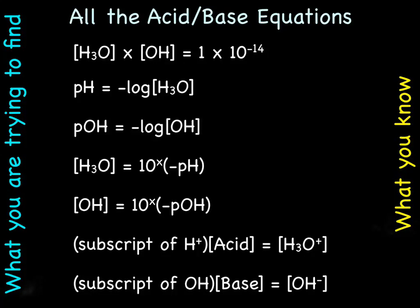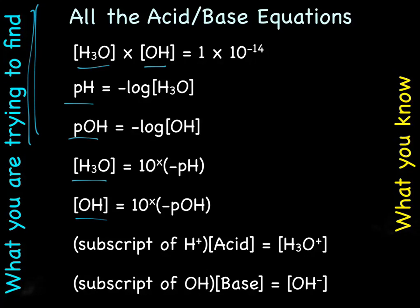Here's a list of all of the equations we have so far for calculating pH. For the most part, the things on the left are the things you're trying to find — the unknown. So we could be finding H₃O⁺, OH⁻, pH, pOH, and on the right side is the stuff you already know.